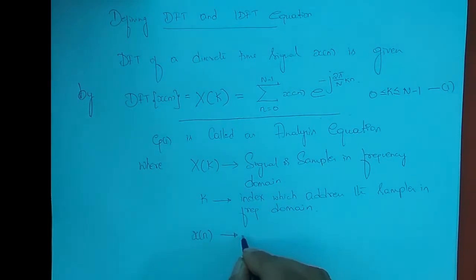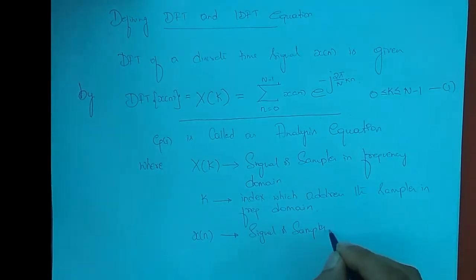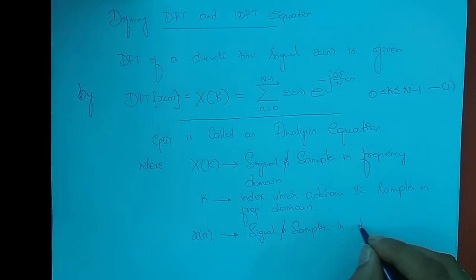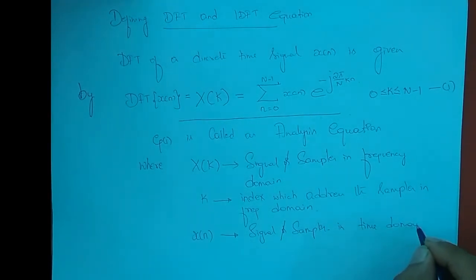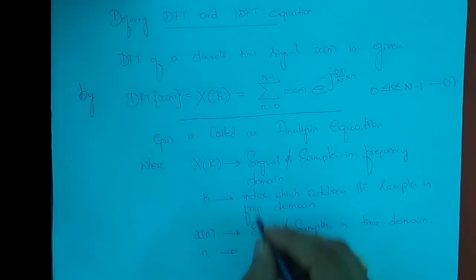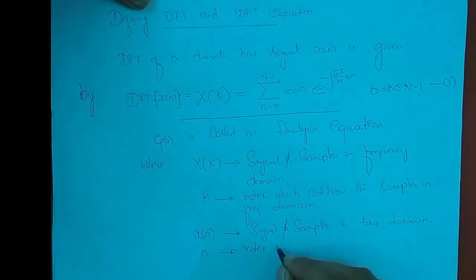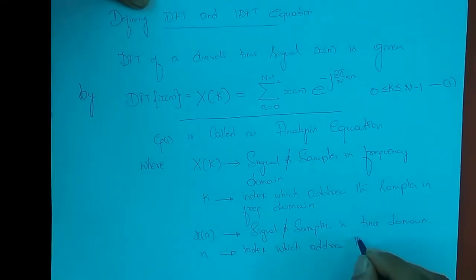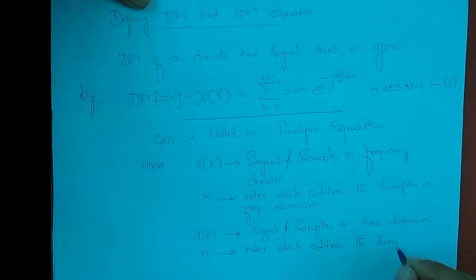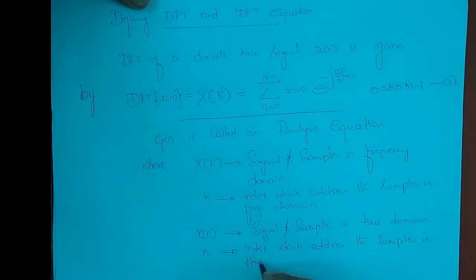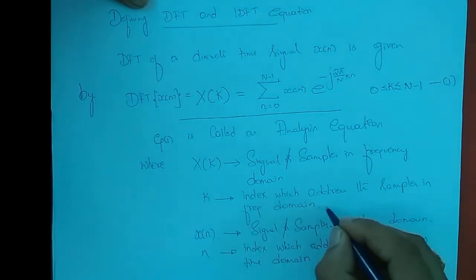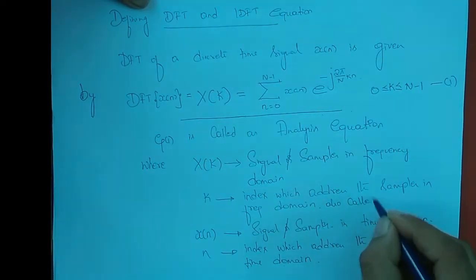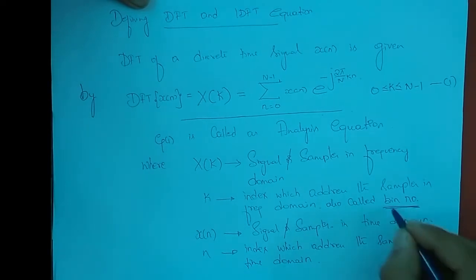What is x of n? It is the input signal — it is a sample in the time domain. K is also called the bin number. I will let you know more about what the bin number is later.